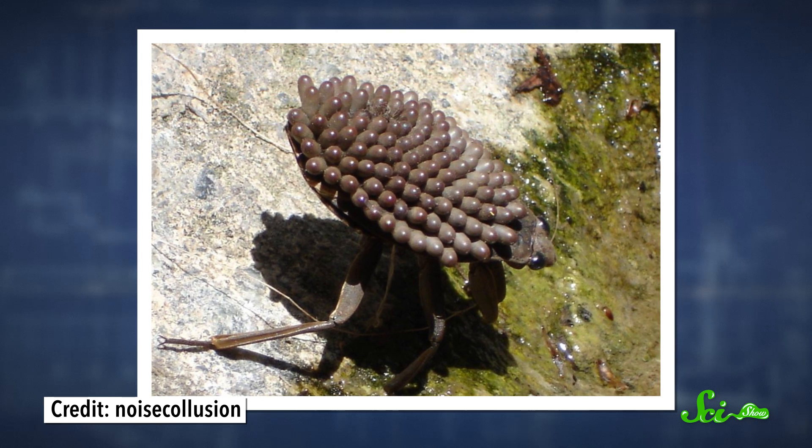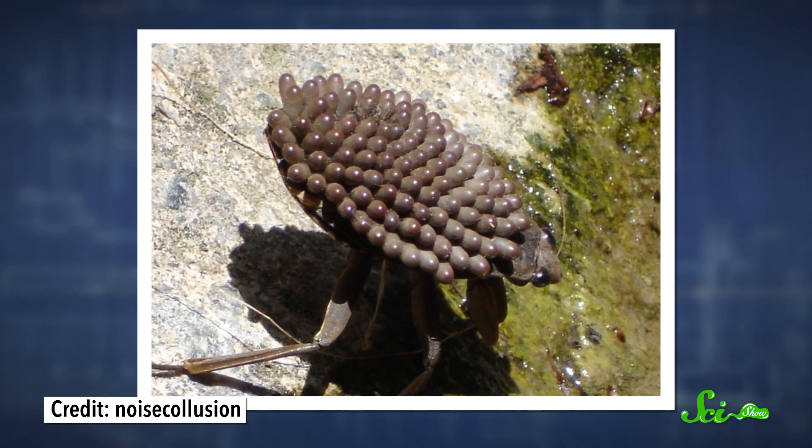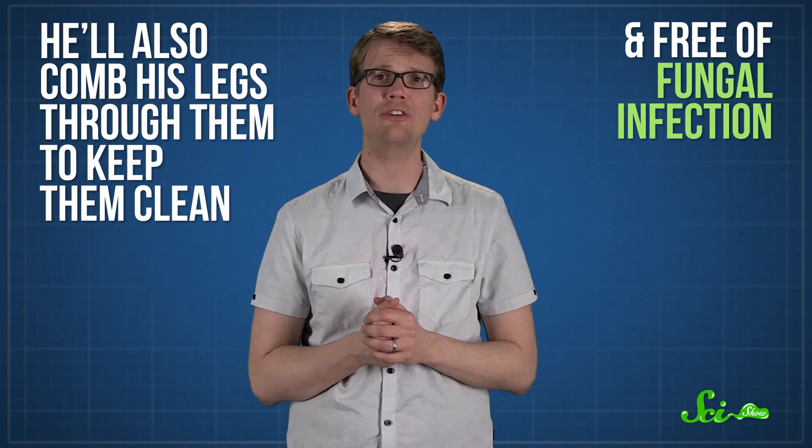Once they mate, the female deposits and glues 100 or more eggs on the male's back before peacing out. And even though it makes it harder for him to hunt for prey, and easier to get caught as prey, he will schlep those eggs around until they hatch. He'll also comb his legs through them every now and again to keep them clean and free of fungal infection, and make sure to air them out at the water's surface.